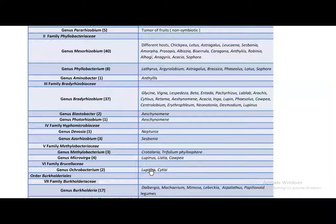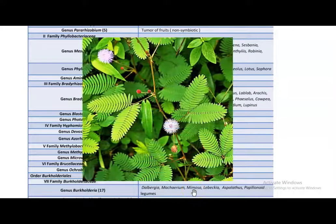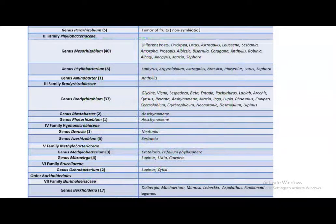A recently identified family containing more nitrogen-fixing nodulating Rhizobium is the Burkholderiaceae, which contains the genus Burkholderia. Burkholderia has been associated with plants such as Dalbergia and Mimosa, including Mimosa pudica — a type of legume in which Rhizobium is associated with nodule formation.